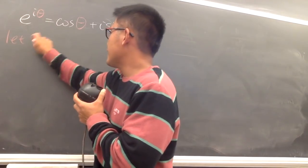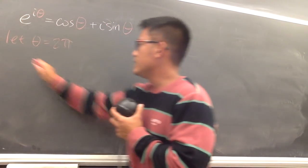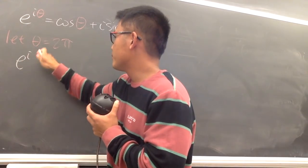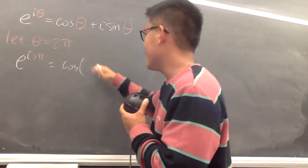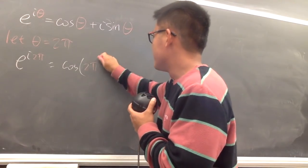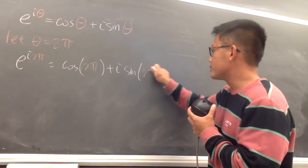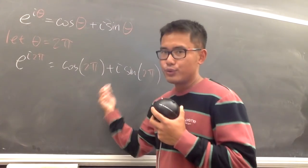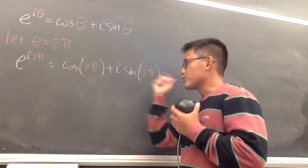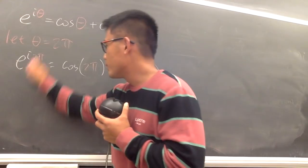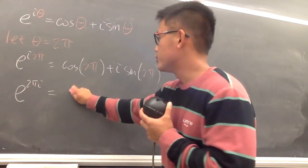First, I'm going to let θ equal to 2π. From here, you will see e to the i2π is equal to cos(2π) plus i sin(2π). Cos(2π) is equal to 1, and sin(2π) is equal to 0, so this is going to be 0. In other words, we can write this down as e to the 2πi equals 1.